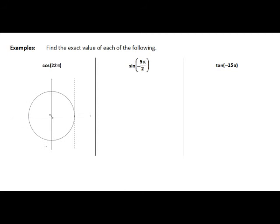And all the even multiples of pi occur out here at the positive x axis, at the point with coordinates (1, 0). So we can see that 22 pi is going to occur out here again where the coordinates are (1, 0). Remembering that cos is to do with the x coordinate, we can see that cos of 22 pi would be equal to 1.